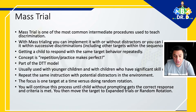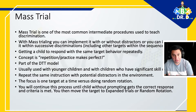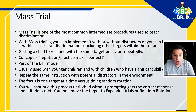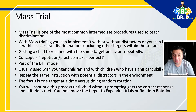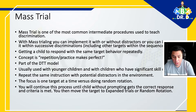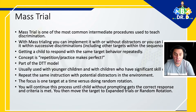It is part of the DTT model and usually used with younger children and with children who have significant skill deficits. We repeat the same instruction with potential distractors in the environment. The focus is one target at a time versus doing random rotation. You continue this process until the child without prompting gets a correct response and criteria is met, then you move the target to expanded trials or random rotation.